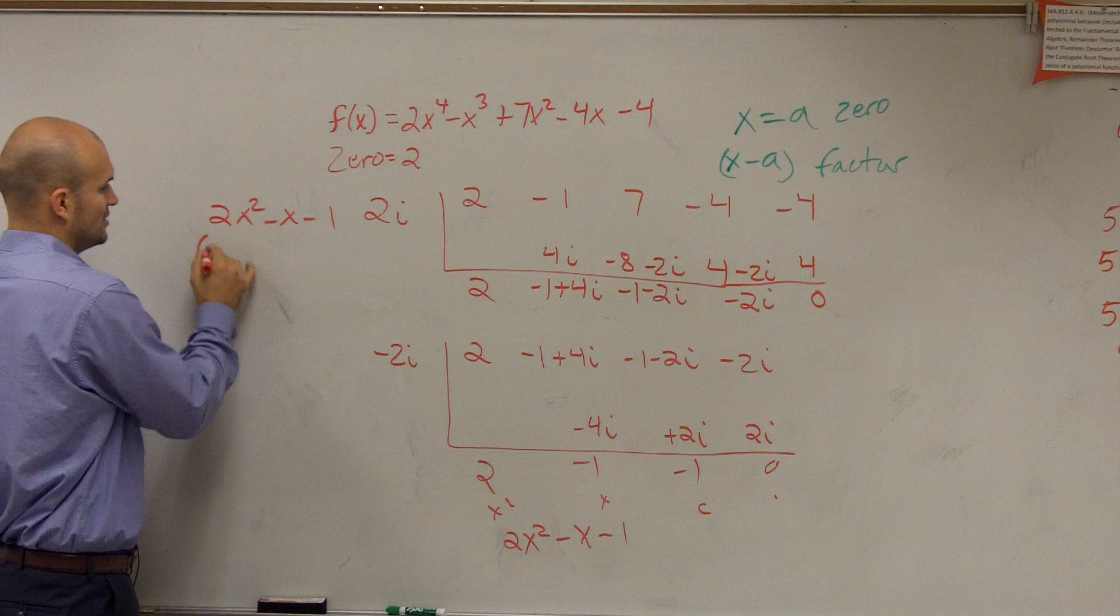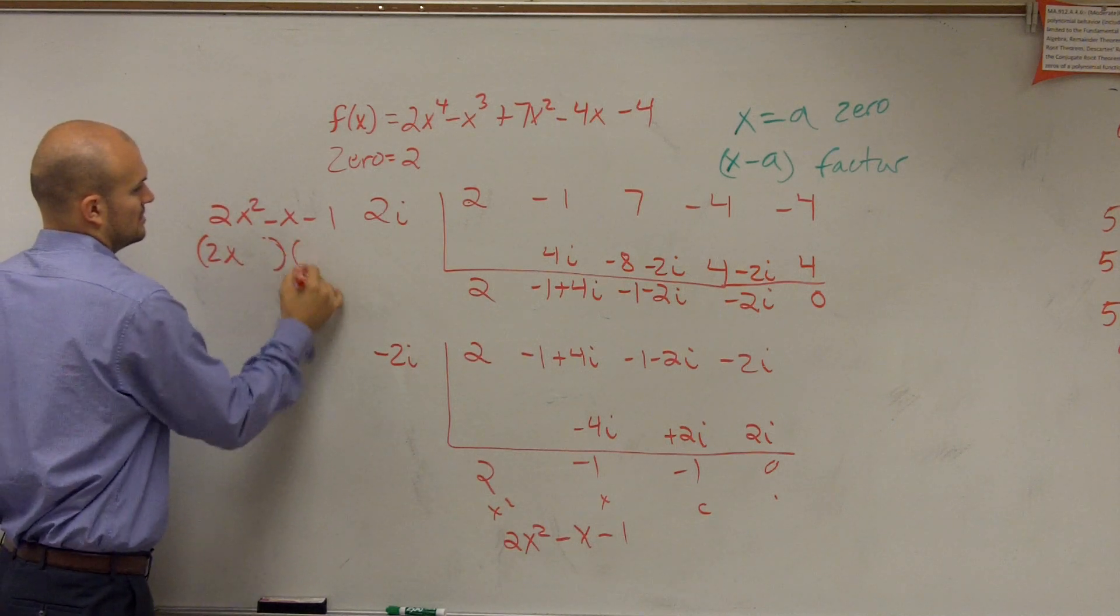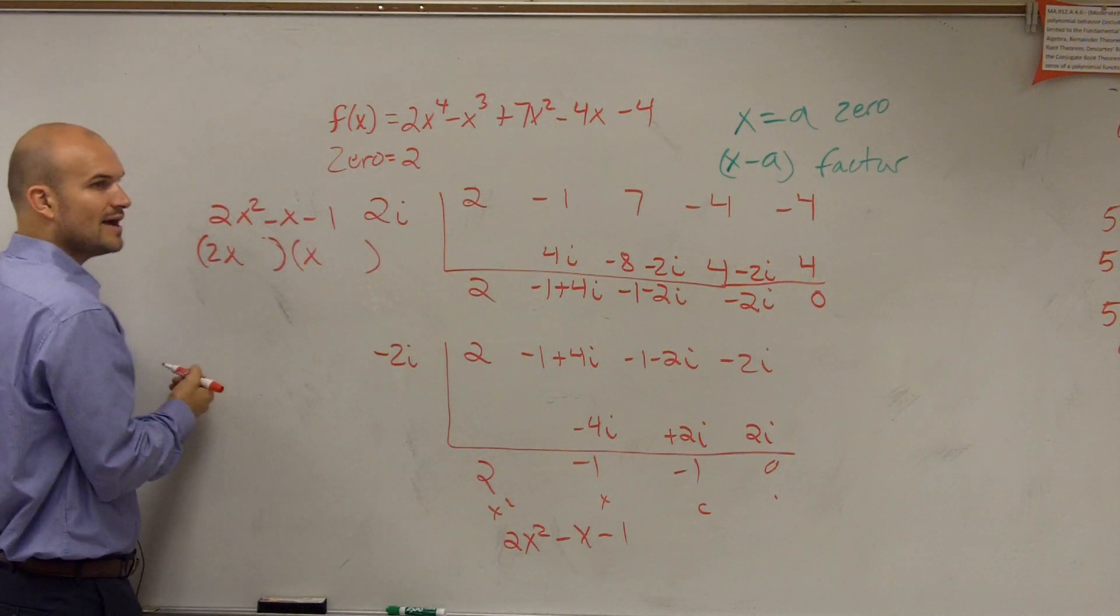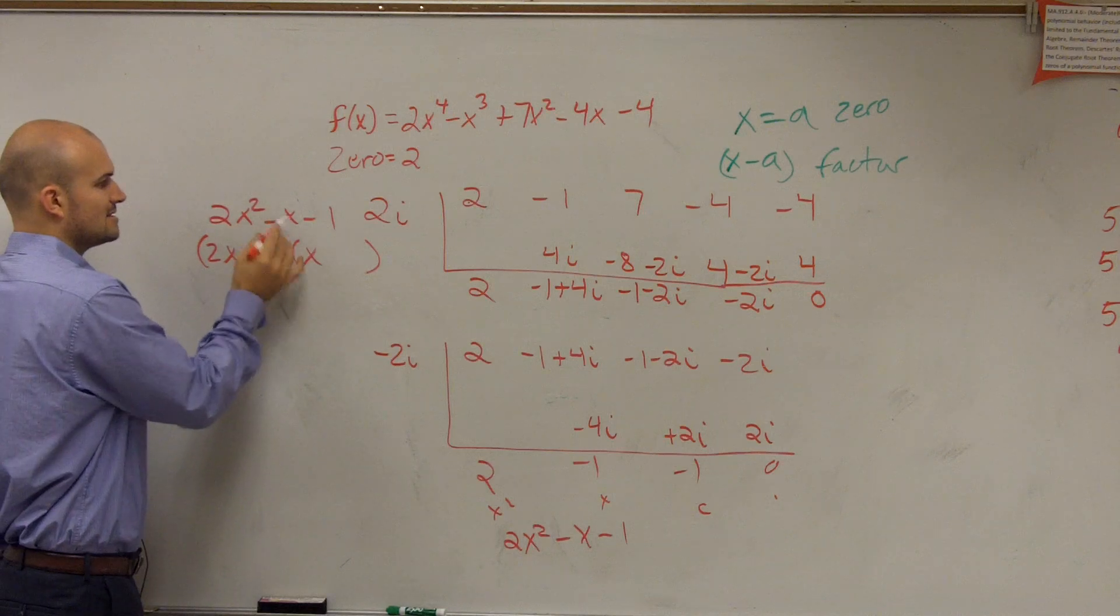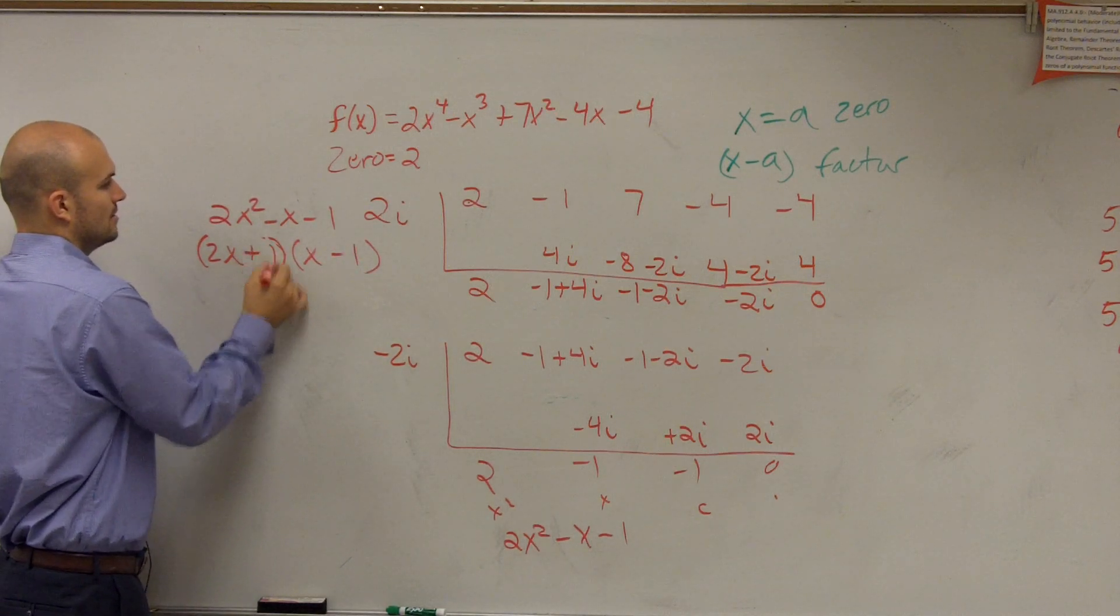Now I need to factor this. So how do you factor that? Well, you've got to see. Factor could only be 2x times x right there, right? Factoring practice. Let's see. Since that's going to be negative, it's going to be minus 1 plus 1.